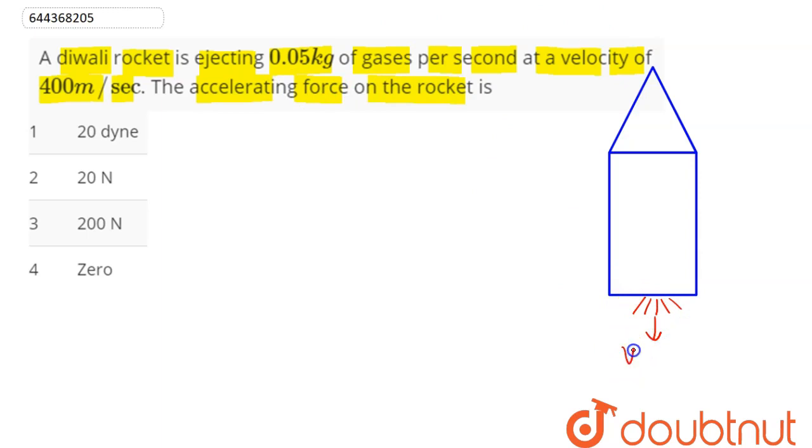Now here we can say that the mass ejected per second is given here as 0.05 kg, that is dm/dt here is 0.05 kg per second. Here we have relative velocity of the jet with respect to rocket given here as 400 meter per second.